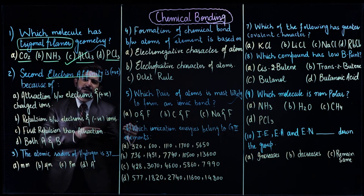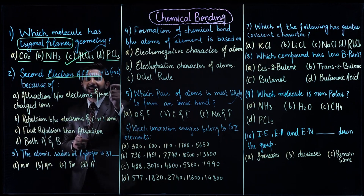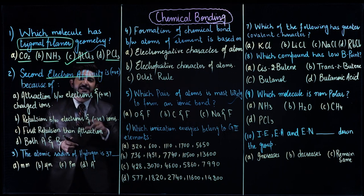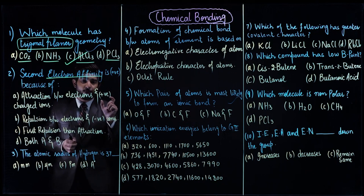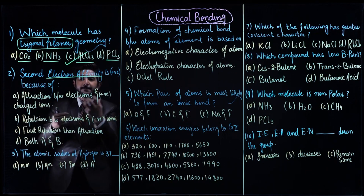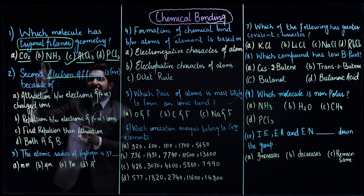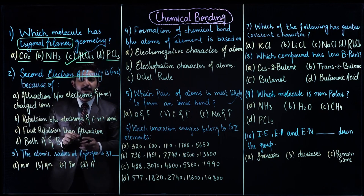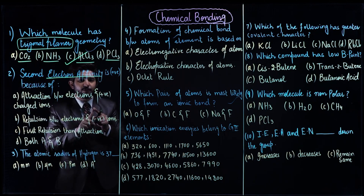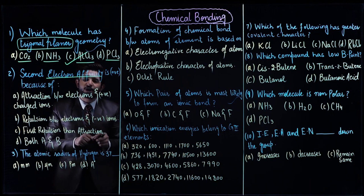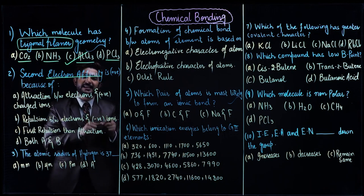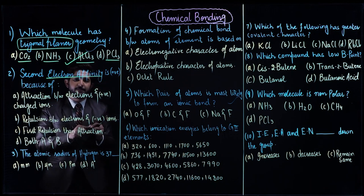Electron affinity can be positive or it can be negative. Positive means it is an endothermic process — the energy is required, the energy is absorbed during this process. The second electron affinity is positive. First electron affinity is always negative — that is an exothermic process.